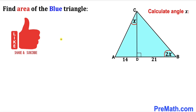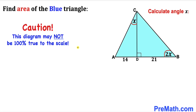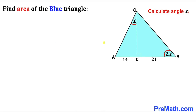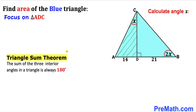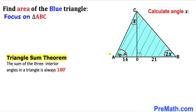Please don't forget to give a thumbs up and subscribe. Note that the figure may not be 100% true to scale. Let's get started. Focusing on right triangle ADC, we recall the triangle sum theorem: the sum of three interior angles must be 180 degrees. Since one angle is 90 degrees and another is x, the third angle must be 90 minus x.